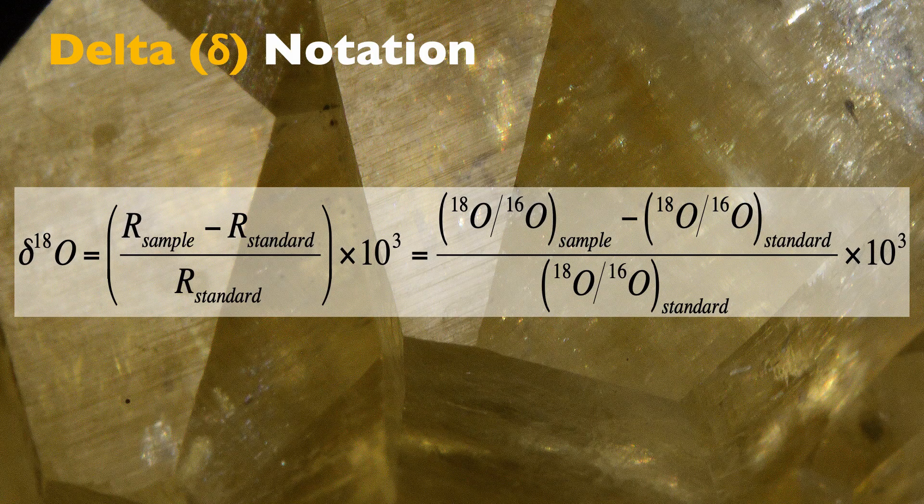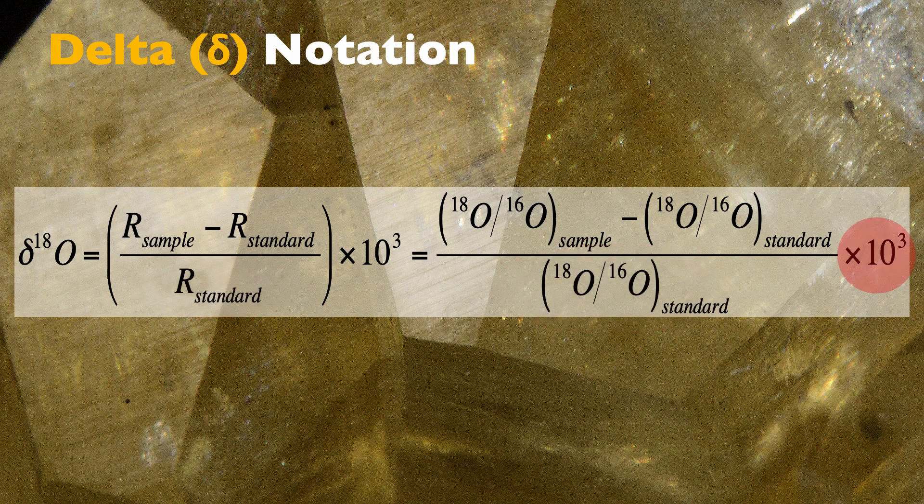The delta notation consists of reporting the ratio of those elements relative to a standard. Why do we use this notation? If we were to report the absolute value, the ratio numbers would be very very small and hard to read and remember. Second, it's very difficult to measure a ratio accurately. What's much easier to measure in a modern mass spectrometer — like the ones behind me — is the difference between the ratio measured in a standard that we know the composition of, and our sample. So in the delta notation, we do the ratio of the sample minus the ratio of the standard, all divided by the ratio of the standard, times 1000.